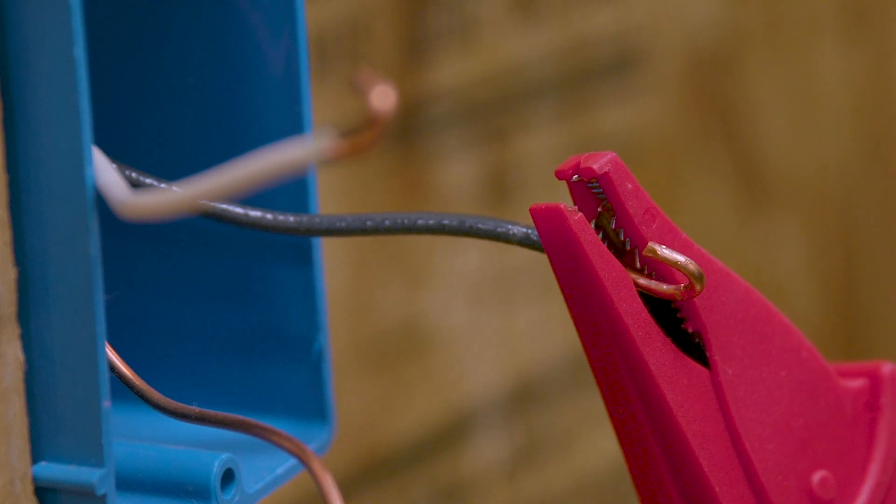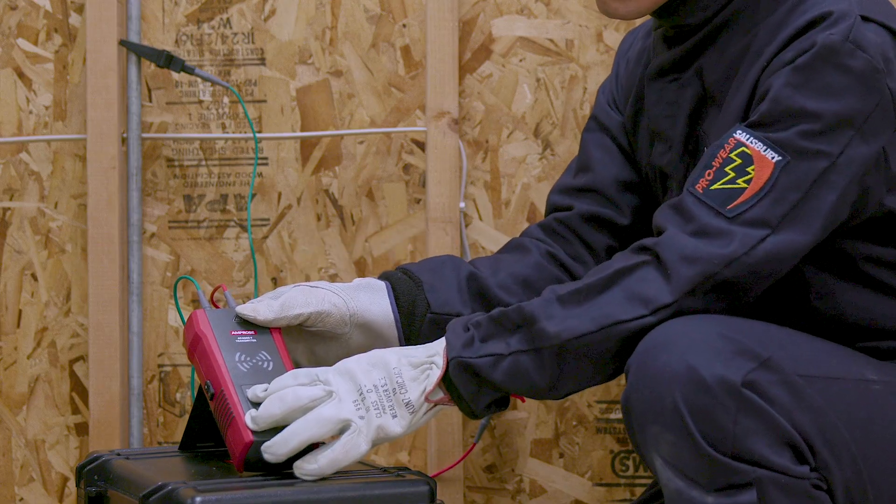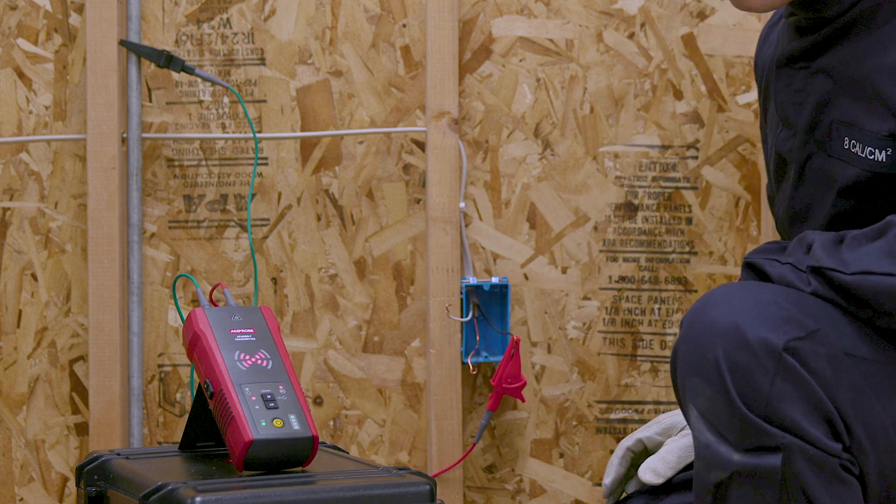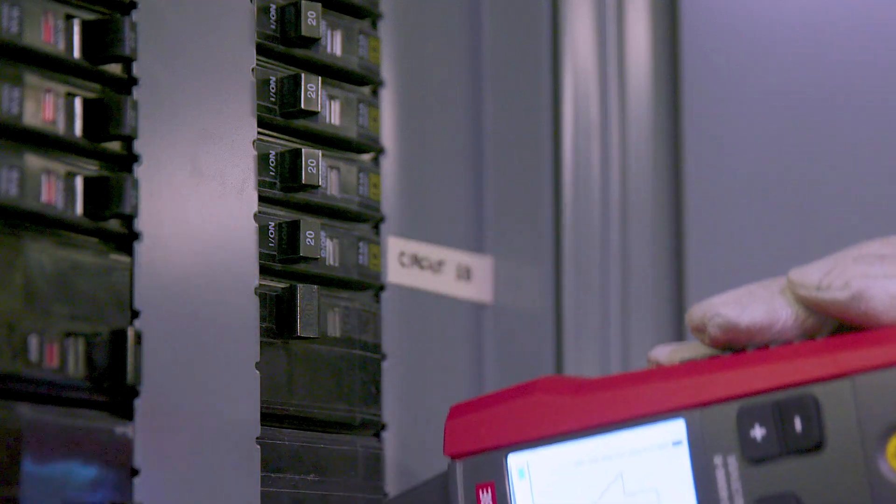Turn on the receiver and push the function button until breaker mode is selected. Scan the breakers repetitively until only one breaker is indicated.